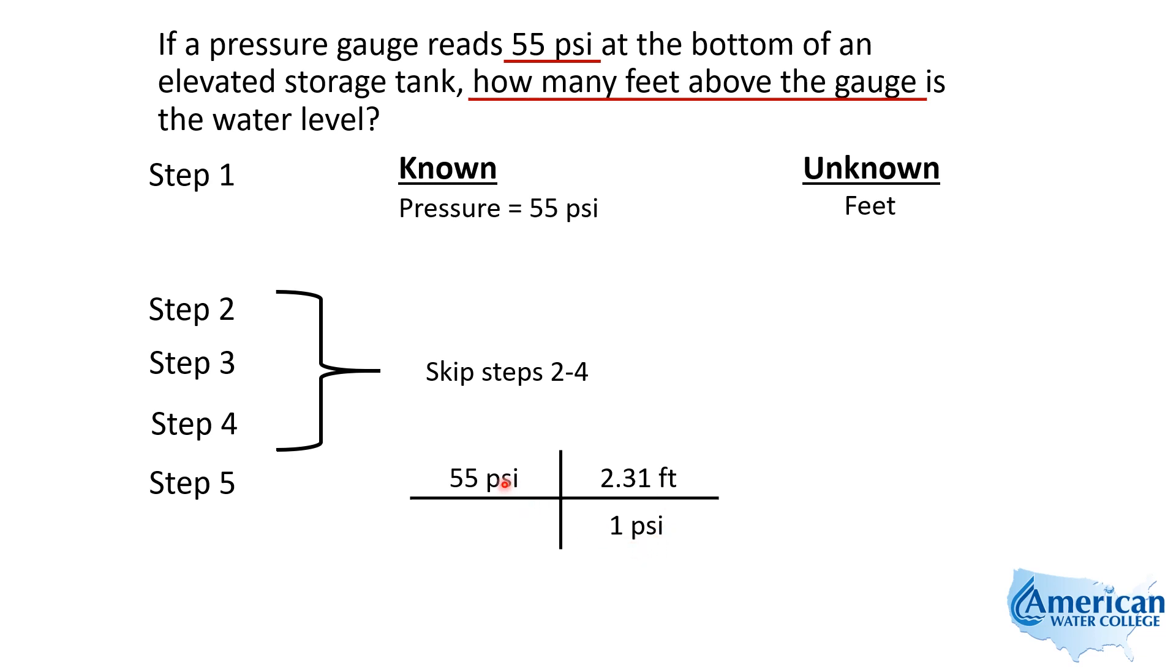This allows our psi to cancel out. So we now just multiply across. 55 times 2.31 feet will give us 127 feet of head.